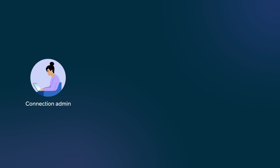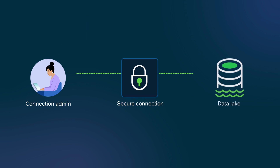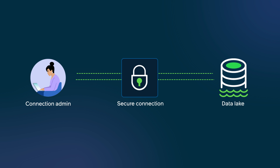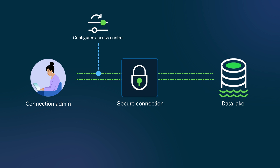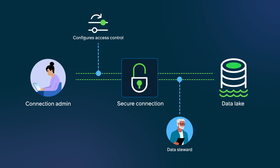The connection administrator then establishes a secure connection to the external data lake in the Workflow Data Fabric Hub using the service account credentials provided by the data source administrator. The connection administrator configures access controls in the connection details, ensuring the data steward can access the connection to view data assets in the external data lake and create a data fabric table.